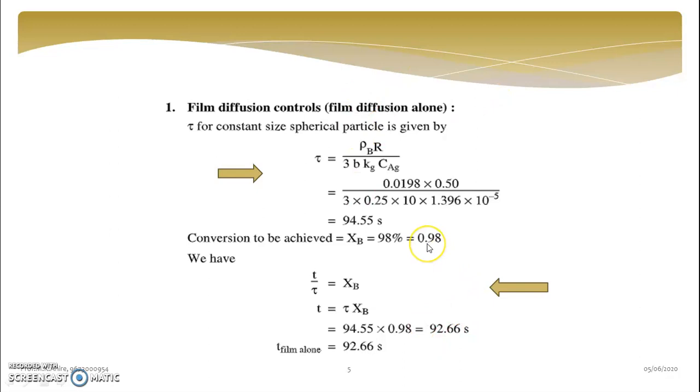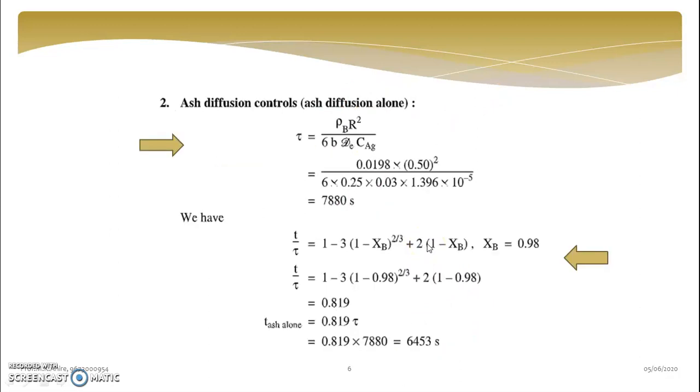Now in similar way, you have to calculate tau and then T for a given case. Like in first we have considered the gas film resistance. Now second, we will consider ash diffusion control. So the formula is changed, and T tau XB relation is also changed. And this already we have discussed in the separate expressions.